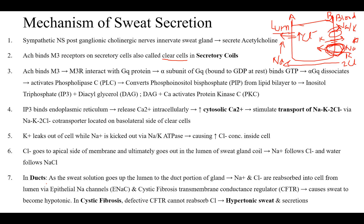Due to sodium and chloride meeting in the lumen, water follows the sodium chloride. In the ductile portion of the sweat gland, as the sweat solution goes up the lumen, sodium and chloride are reabsorbed into the cell from the lumen via epithelial sodium channels and cystic fibrosis transmembrane conductance regulator (CFTR) channels respectively. This reabsorption in the ductile portion causes the sweat to become hypotonic.